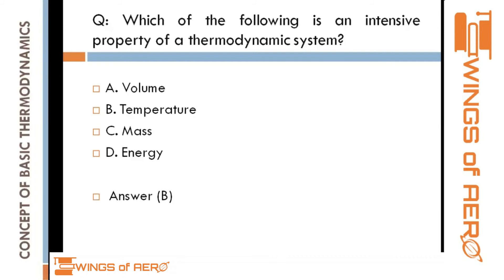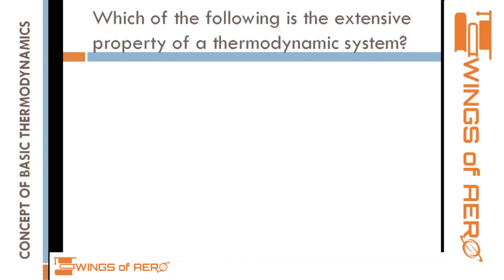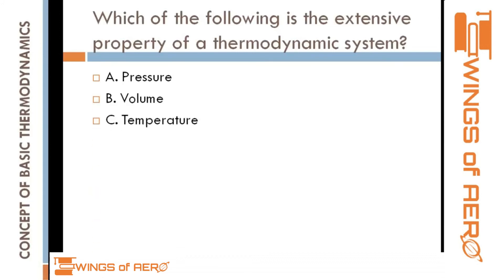Here is a similar question: Which of the following is an extensive property of a thermodynamic system? Extensive properties depend on mass. Among the given options, volume is the one that depends on mass, so the answer is B — volume is an extensive property.